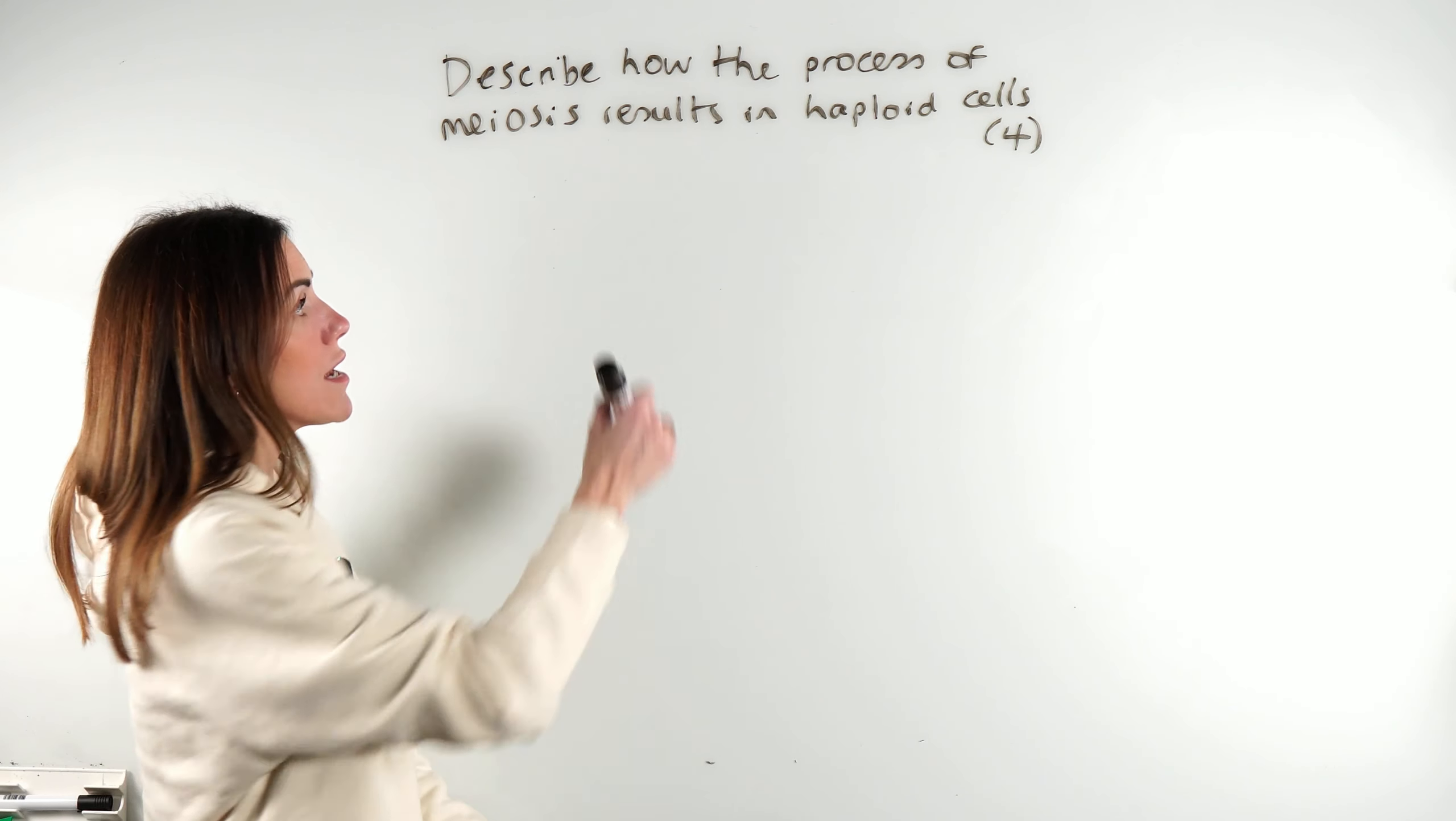Let me just do some quick diagrams just to help you with that. So the first division, what we're doing there, if you imagine this is the equator of the cell, the first division is going to separate the pairs of chromosomes.